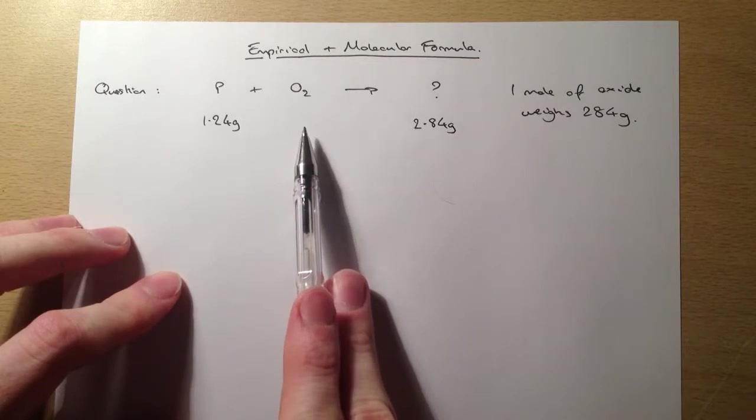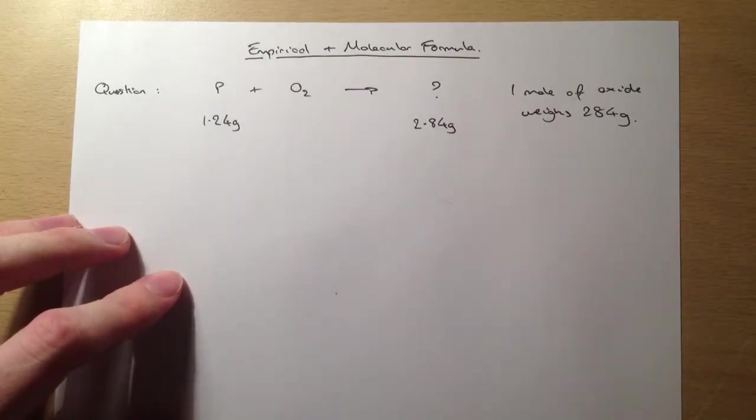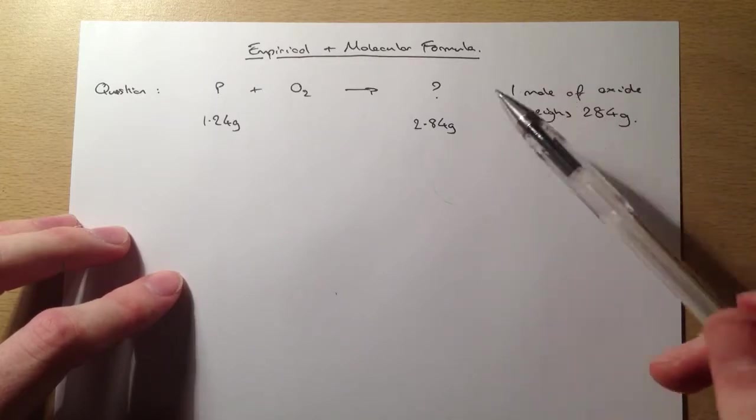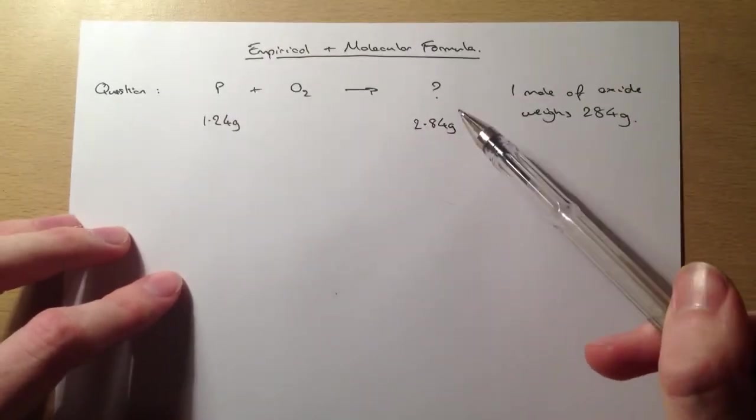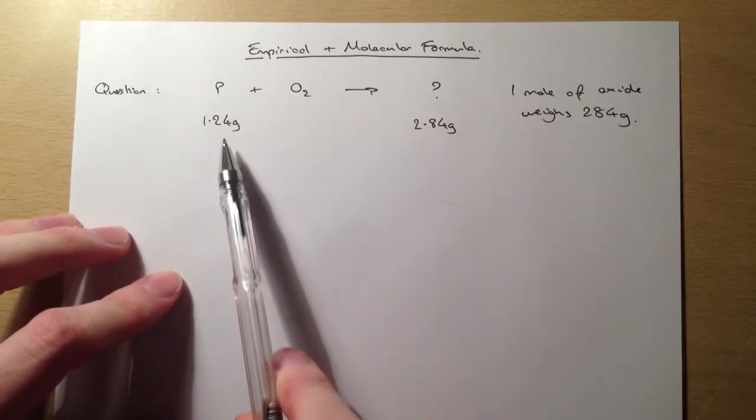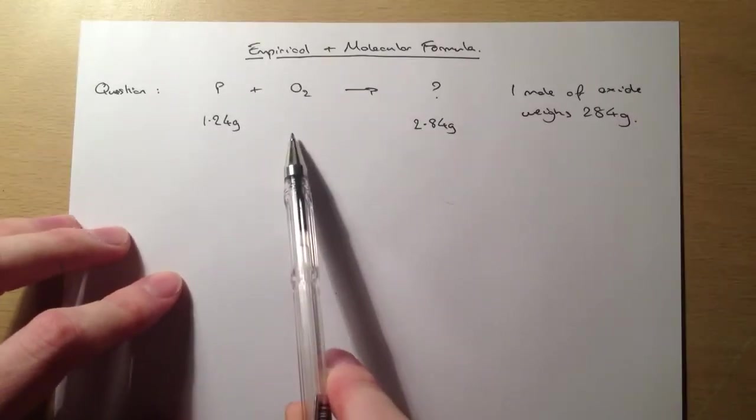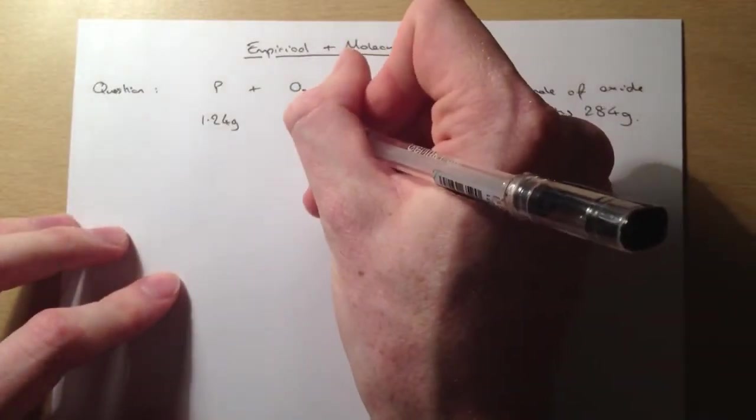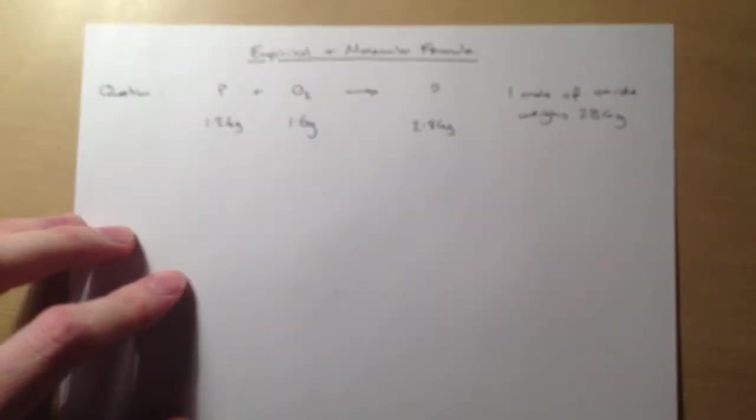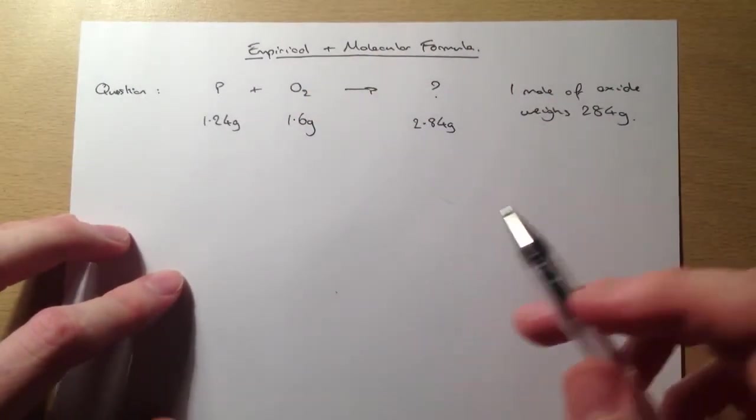So we are told that we've got 1.24 grams of phosphorus reacting with oxygen to give 2.84 grams of the oxide. Now, in order to work at the empirical formula, we need to find out what mass of oxygen we've used. But due to the law of conservation of mass, if we've got 2.84 grams of product and 1.24 grams of that is phosphorus, then the remaining must be oxygen. So in this case, we can work out that we have 1.6 grams of oxygen.